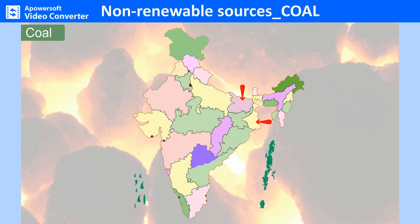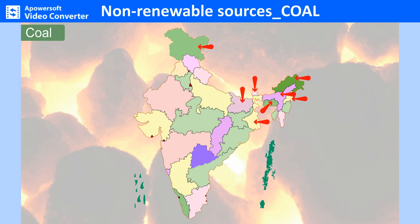The Jharia and Raniganj coalfields are the two largest coal fields in Bihar and West Bengal respectively. Other areas include Assam, Meghalaya, Nagaland, Arunachal Pradesh, Kashmir and Sikkim. The coal found in India is not of very high quality, so coking coal is imported from other countries. Lignite reserves are not widespread and are found in Tamil Nadu, Rajasthan, Gujarat, Puducherry and Jammu and Kashmir.